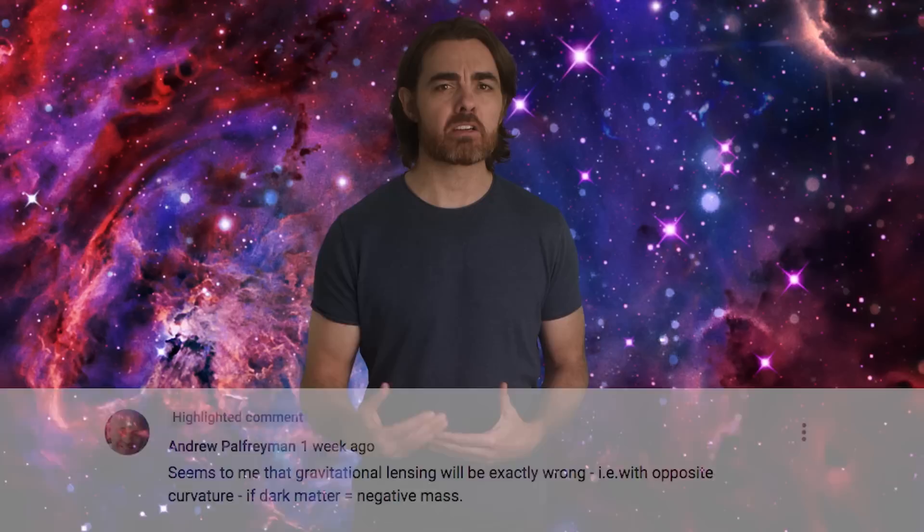Gravitational lensing is the bending of light by a gravitational field. We see it in the warping of images of distant objects due to the gravitational fields of more nearby galaxies. We can use that warping to measure masses. And yeah, those masses tell us that dark matter has positive mass.